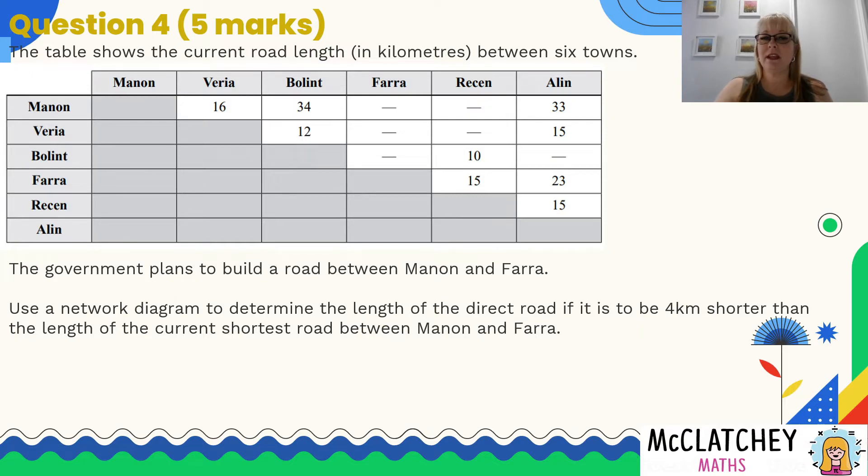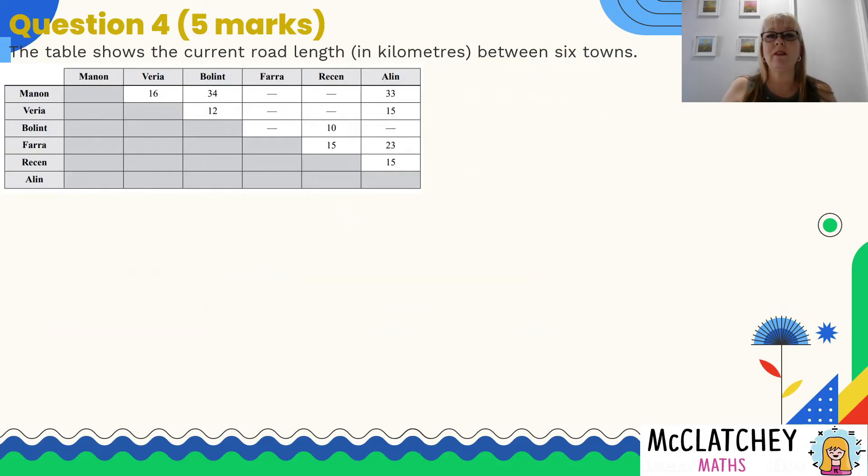Now you might be thinking to yourself, well hang on, there isn't a road between Manon and Farrah. No, there isn't directly, but you have to go through other places to get there. So let's start with drawing that network diagram to start with. So I've made a bit of space here. Firstly, I'm going to just take all of the first letters of each of these places and I've just put them in a circle, anti-clockwise.